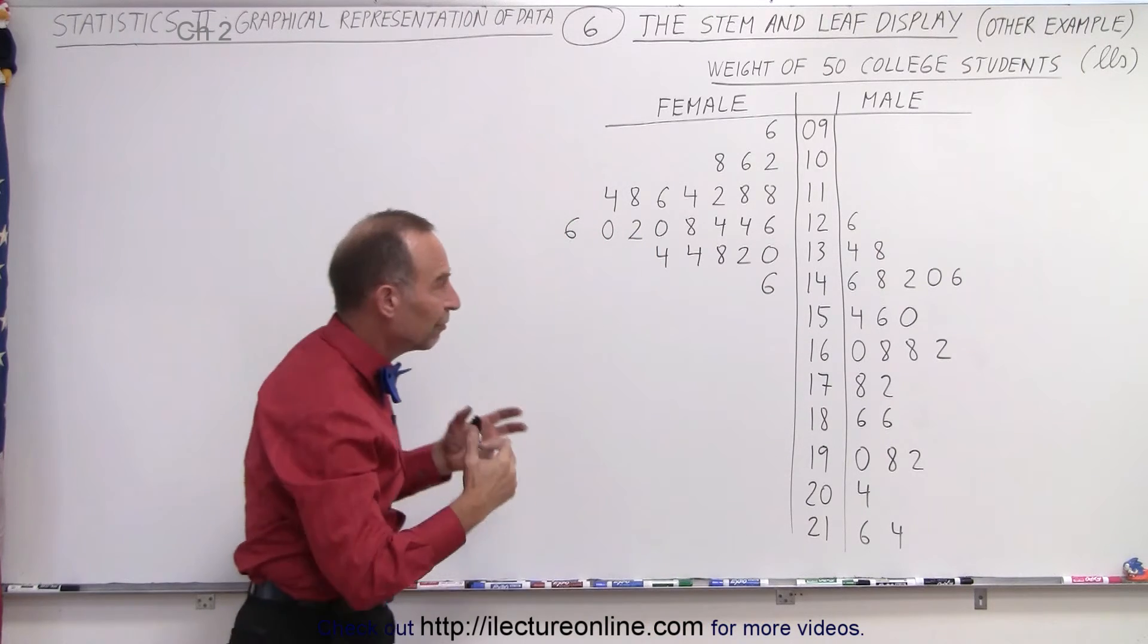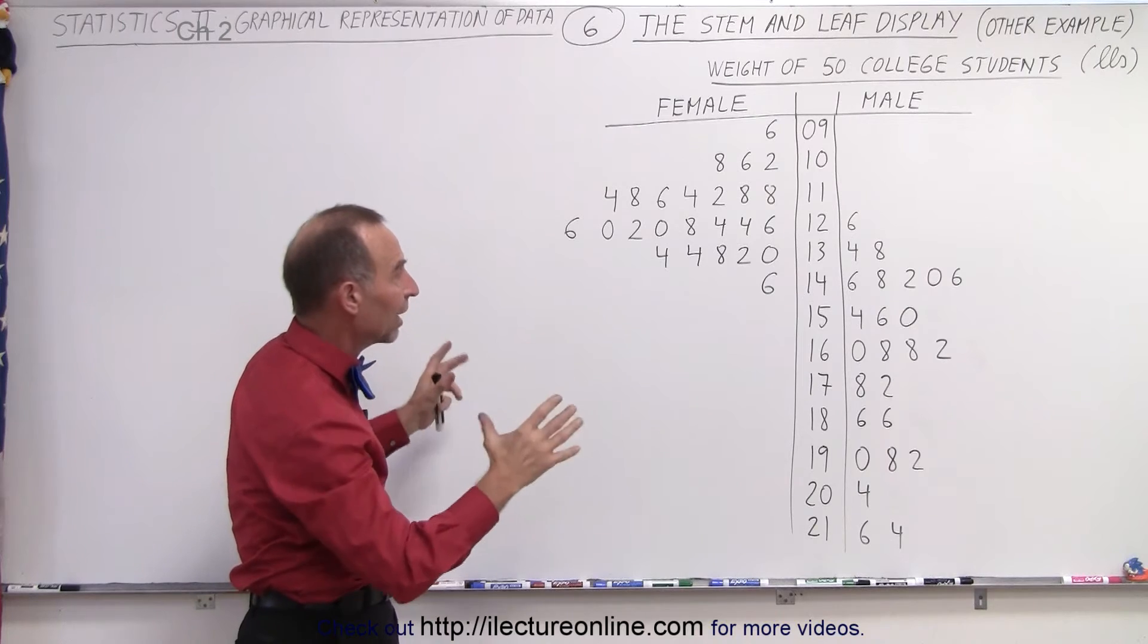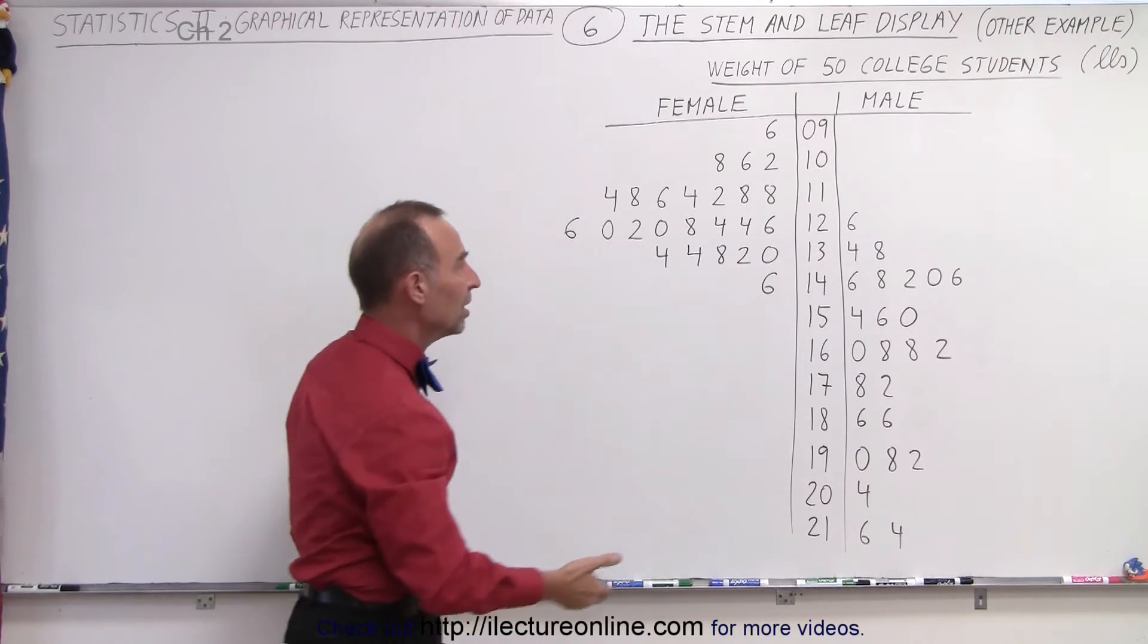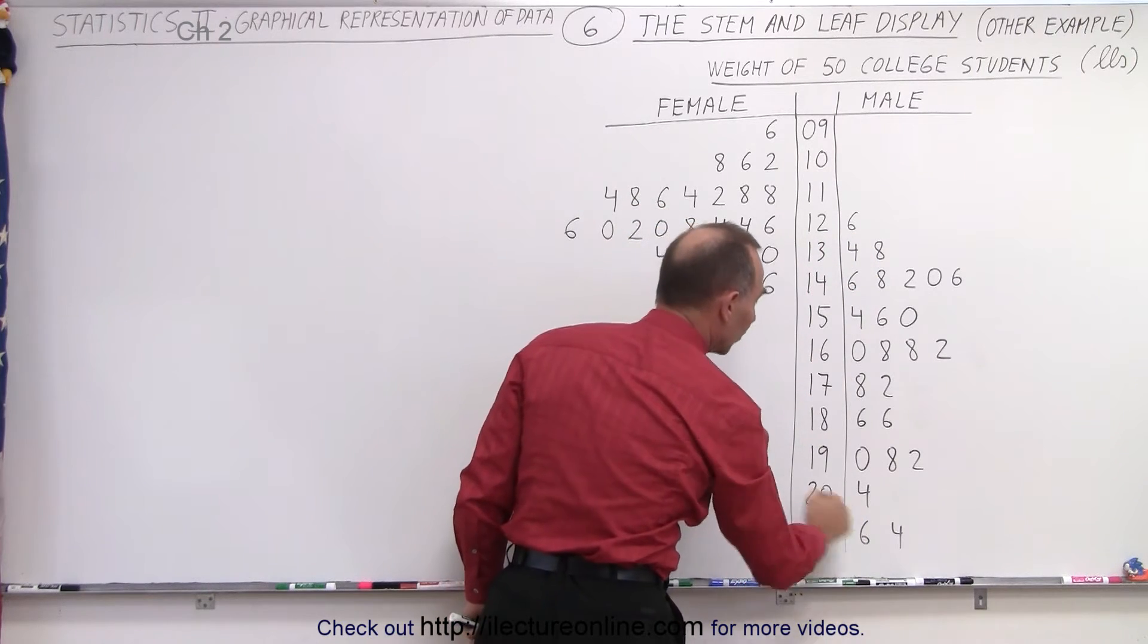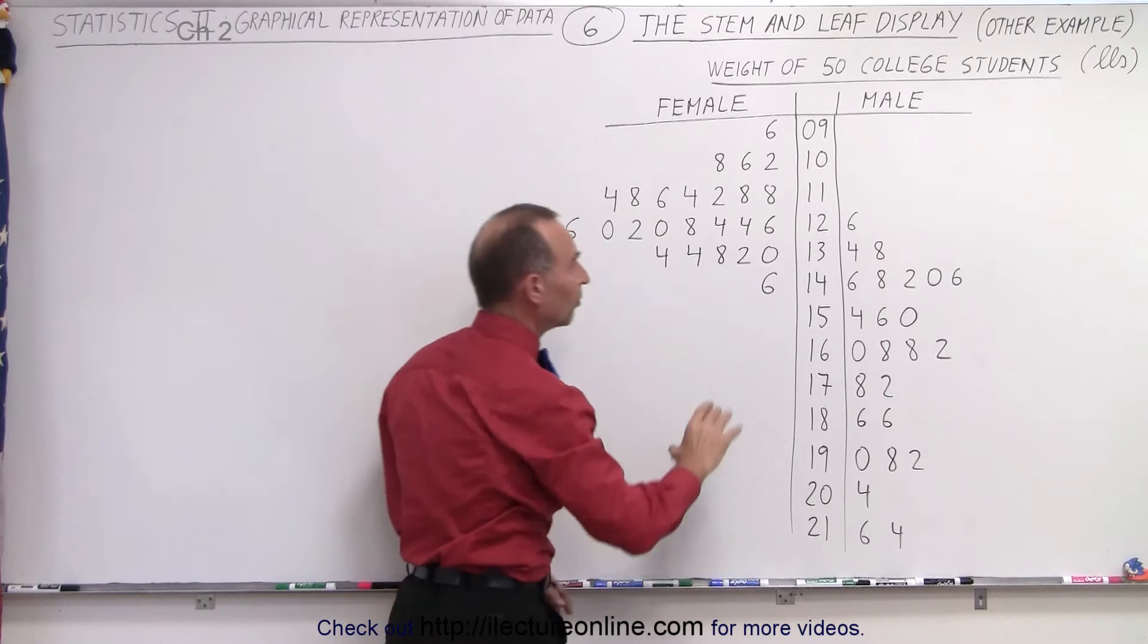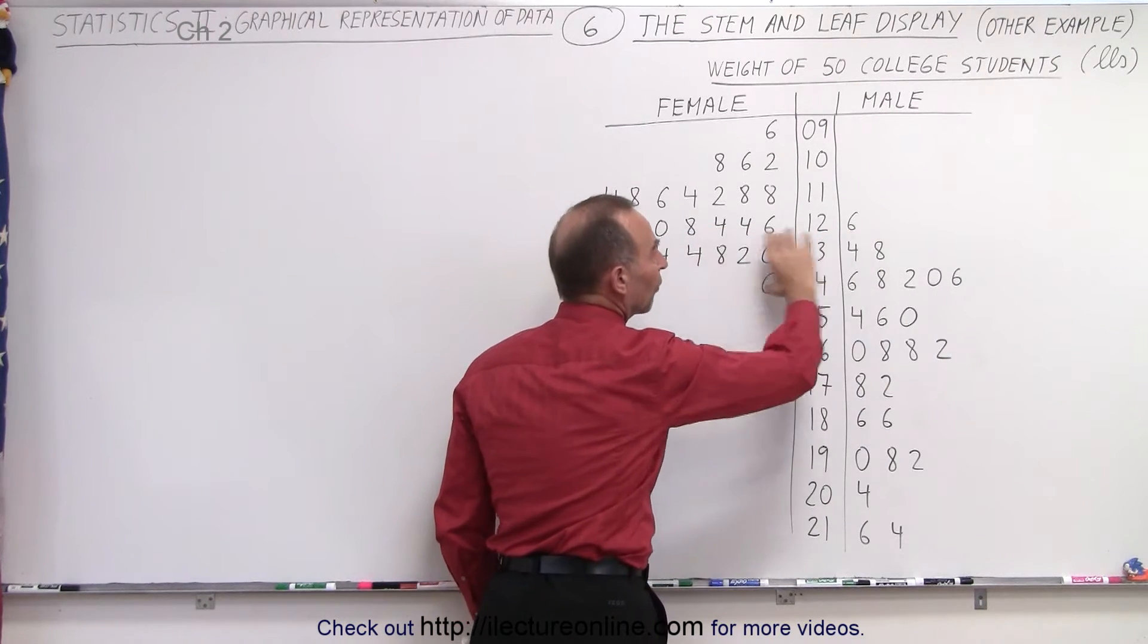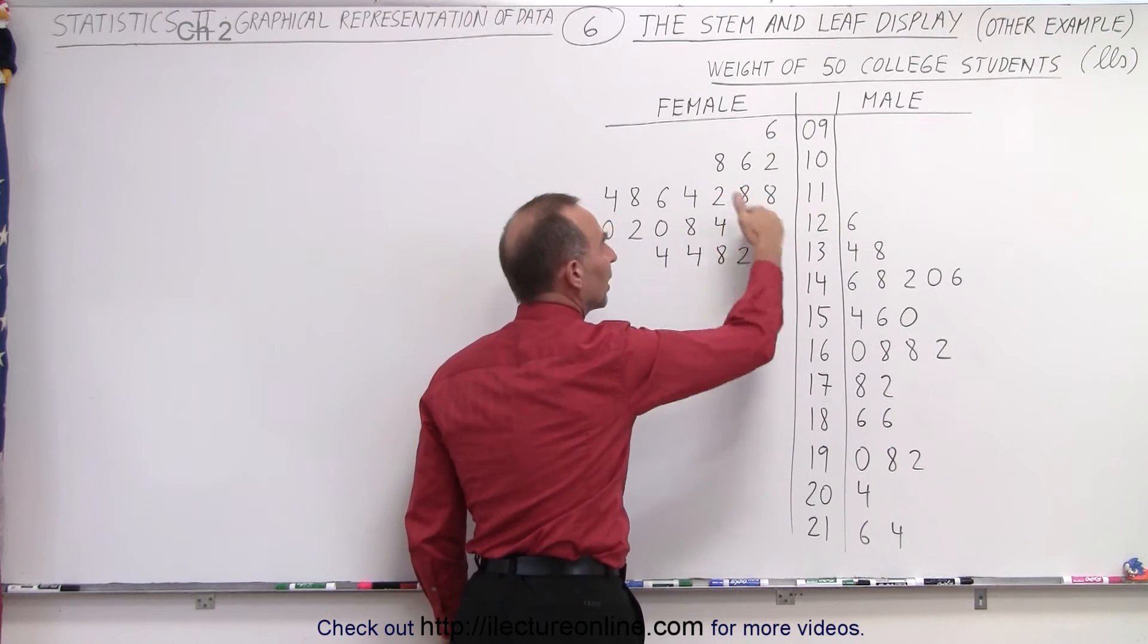So notice that in a very quick view of this particular representation of the data, you can see all kinds of information. You can see the range for the males from 126 to 216 pounds, for the females from 96 to 146 pounds. You can see there's a little bit of an overlap—that some of the lightest males are not as heavy as some of the heavier females.